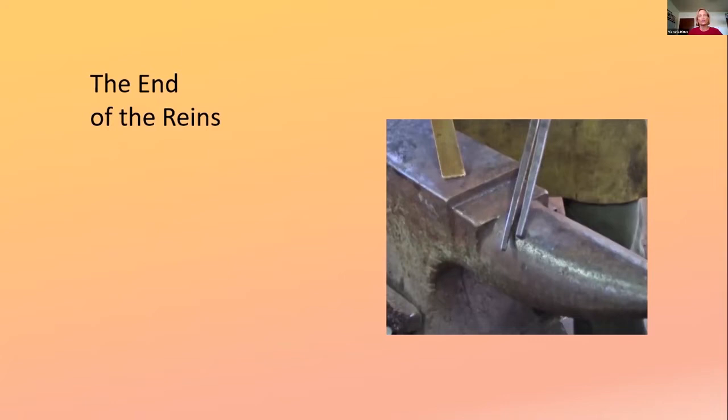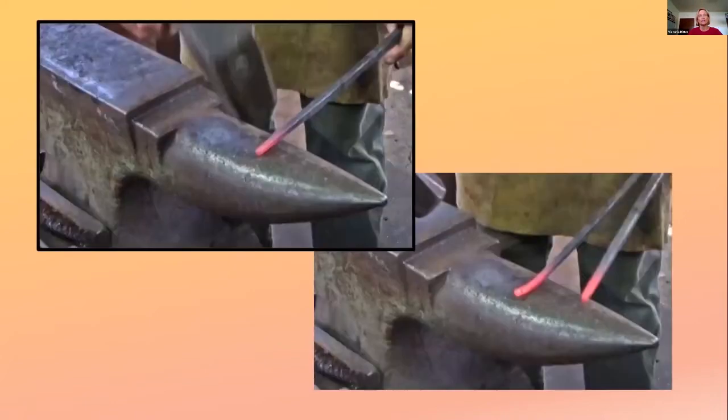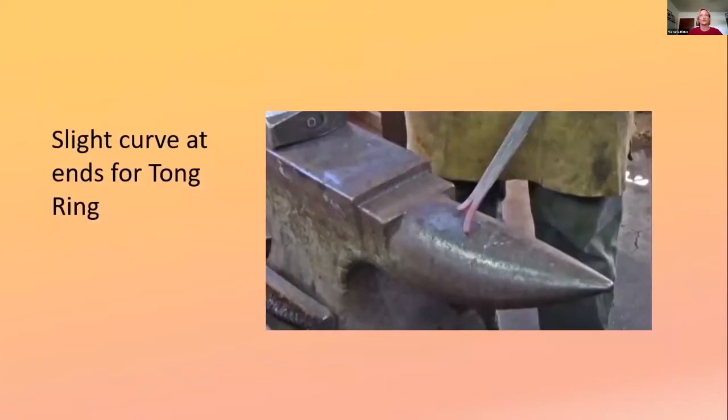Having one end slightly longer keeps you from fighting that tong ring as you slip it over the edge. So take a very short heat to the end and over the edge of the horn, just going to bend that. You're not forging at this point, so all the blows should be over air. Bend it slightly, do the same on the other side, and you'll end up with something like this that'll allow a tong ring to slip on there and hold that in place.